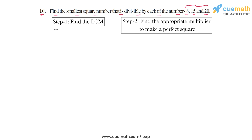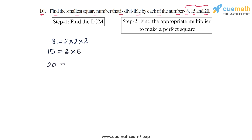In step one, we have to find the LCM. To find the LCM, let's write the prime factorized form of each of the three numbers. So 8 is 2 × 2 × 2, 15 is 3 × 5, and 20 is 2 × 2 × 5.